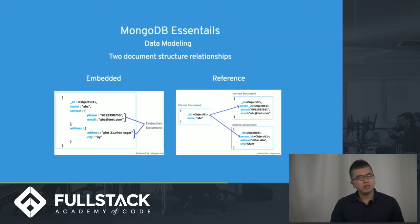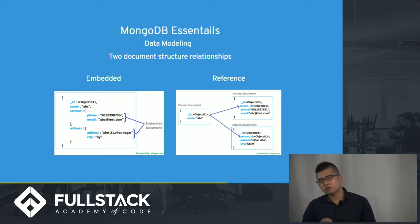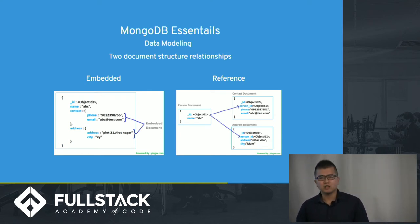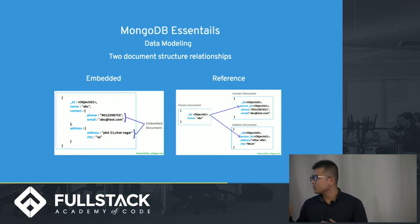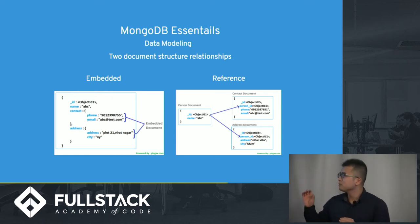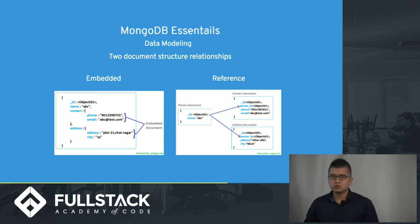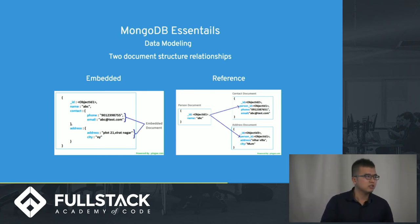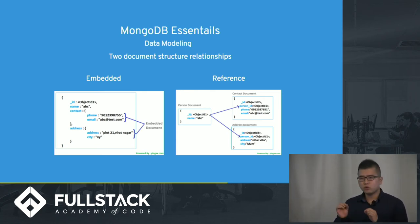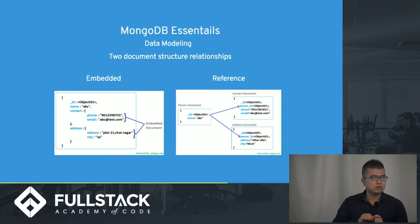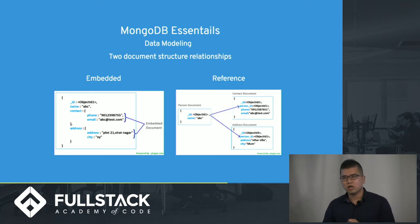In MongoDB, there are two types of data modeling. One is called embedded — essentially, just like the diagram shows, it's like JSON inside another JSON. For reference-based modeling, you store a JSON ID into the parent JSON, and then you can reference through the object ID.